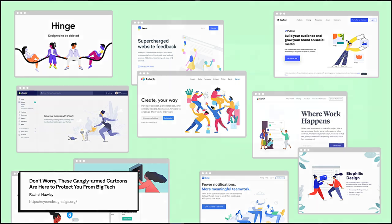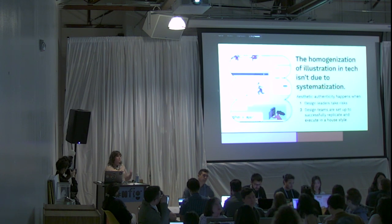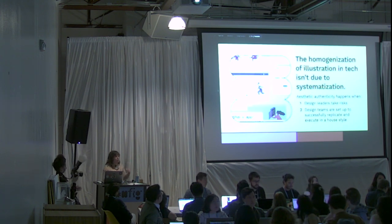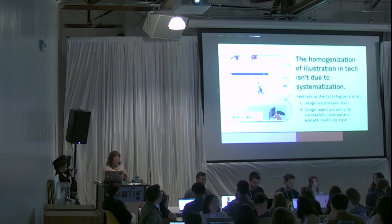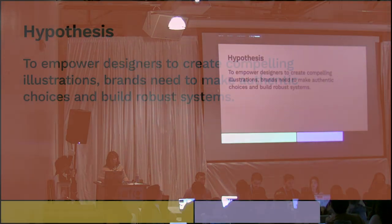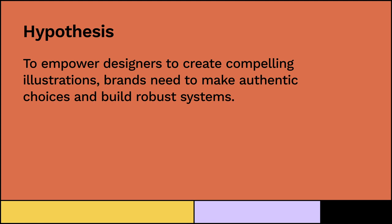In order to combat that, I'd like to make the argument that the homogenization of illustration in tech isn't due to systematization. The way that we create aesthetic authenticity happens when design leaders take risks — at the very beginning, the people at the top are making bold choices. And secondarily, design teams are set up to successfully replicate and execute in a house style. That will be different by company — maybe you have an illustrator you'll always work with, or maybe you need to do it in-house. My hypothesis is that to empower designers to create compelling illustrations, brands need to make authentic choices and build robust systems. The authentic choices part is subjective, so we're not going to talk much about that today. We are going to talk about building robust systems.